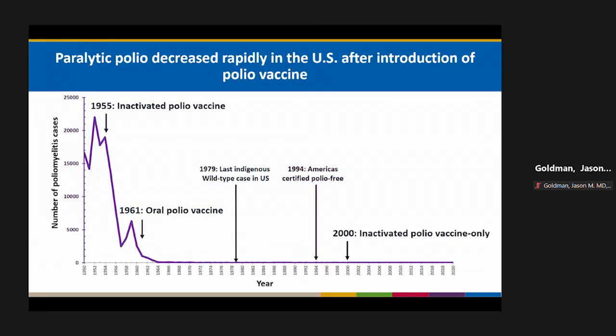Paralytic polio decreased rapidly in the U.S. after introduction of the inactivated polio vaccine in 1955, and subsequently the oral polio vaccine was used beginning in 1961. The U.S. saw its last wild-type case of polio in 1979, and by 1994, the Americas were certified polio-free. In 2000, the ACIP voted to use only inactivated polio vaccine going forward.